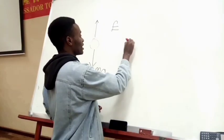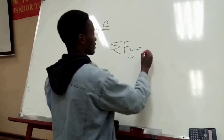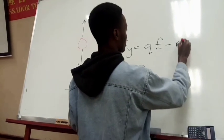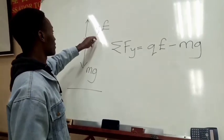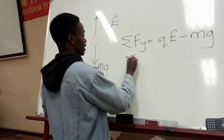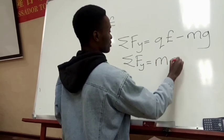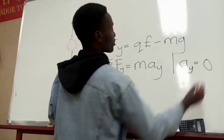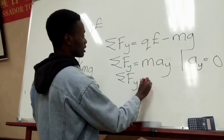So now, summation of forces in the y direction must be equal to zero. We have qE minus mg. Now this mg is minus because it's in the downward direction. If we take up as positive, we have the qE as positive and the mg as negative. We are being told that the summation of forces in the y direction is equal to mass times acceleration in the y direction. But the acceleration in the y direction is equal to zero because our particle is stationary.